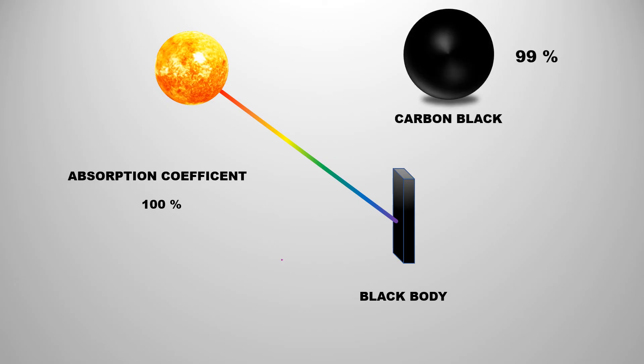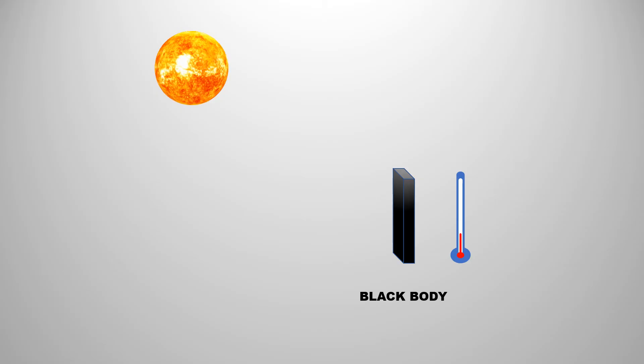Carbon black is an object that can absorb 99% of the incident radiation. Now, we come back to our question, what is a black body radiation?